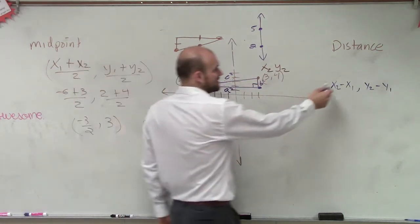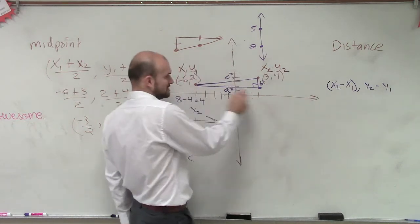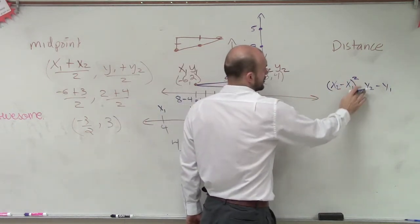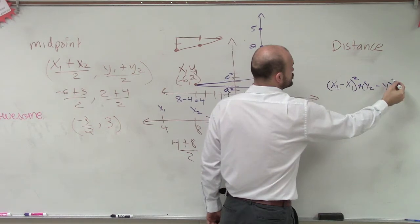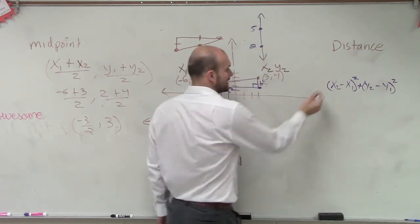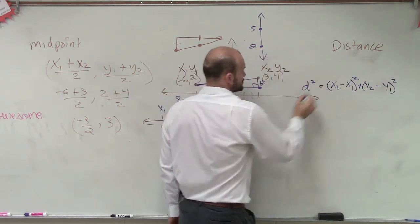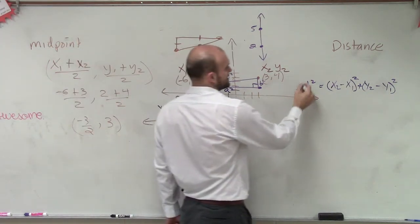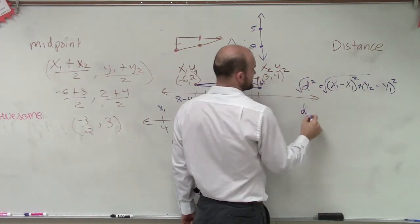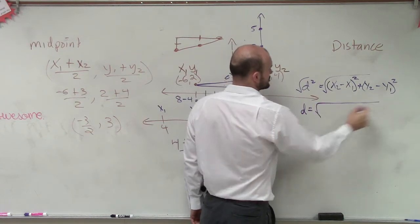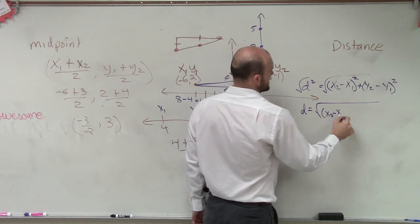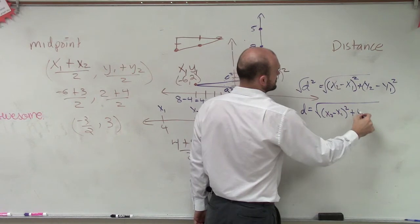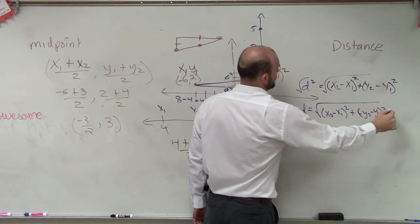So we could say that the difference of the x's, which is this, squared, plus the difference of your y's, squared, equals your distance squared. But we're not trying to find the distance squared. We're trying to find the distance. So I take the square root of both sides. So we say d equals the square root of x2 minus x1 squared, plus y2 minus y1 squared.